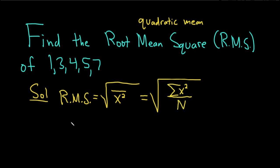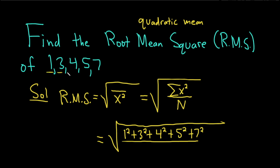So here, we take the square root of all the data squared and added up. So it would be 1 squared plus 3 squared plus 4 squared plus 5 squared plus 7 squared. All of that is divided by capital N, which in this case is 5, because we have five numbers.